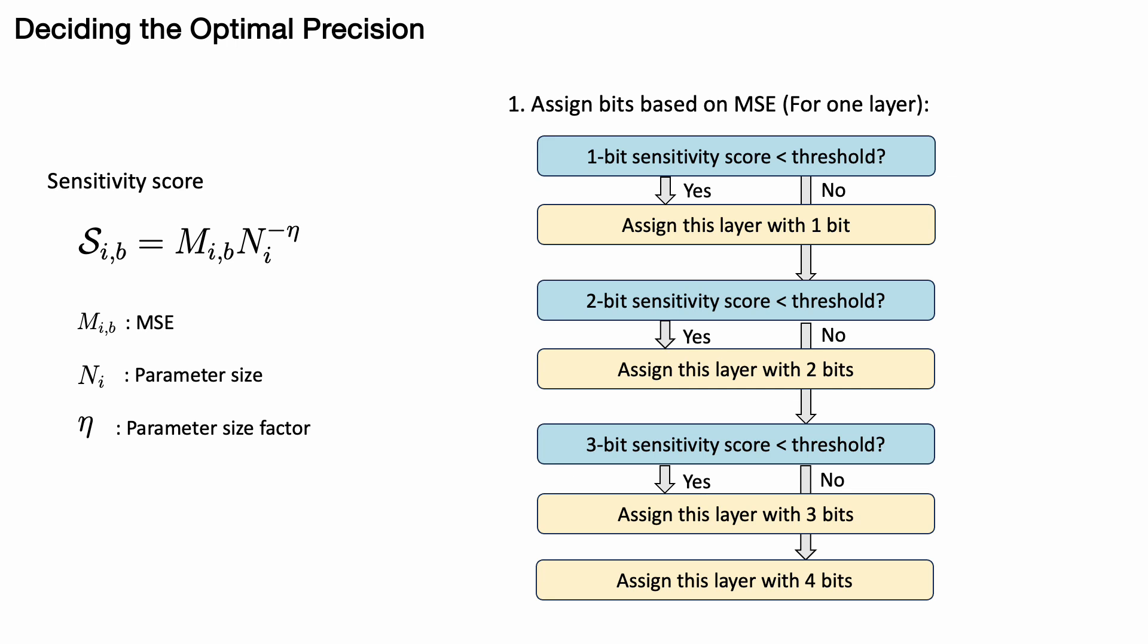Based on the sensitivity score, we begin quantizing each layer. For each layer, we assess bit assignments ranging from 1 to 3 bits to see if the sensitivity score falls below a predefined threshold. If it does, we assign the corresponding bits to that layer and exit the process. If the score does not meet the threshold in any case, the layer is assigned 4 bits.